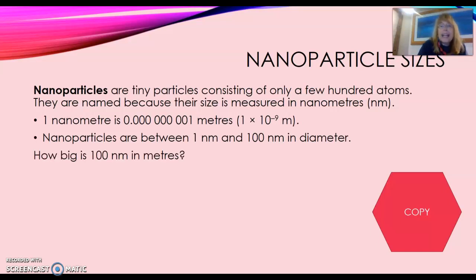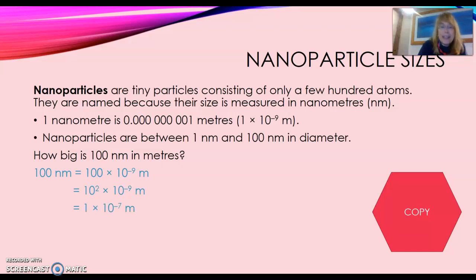What I'd like you to do is copy this down and then work out how big a hundred nanometers is in meters. Purple pen your answer when you're ready. A hundred nanometers is a hundred times ten to the minus nine. A hundred is the same as ten to the two, times ten to the minus nine, which gives us one times ten to the minus seven meters.